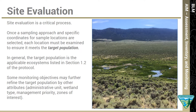Site evaluation is a critical process for all monitoring projects. Once a sampling approach and the specific coordinates associated with sample locations have been selected, each location must be evaluated to ensure it fits within the target population of the monitoring project. In general, the target population is the applicable riparian and wetland ecosystems defined in section 1.2 of the protocol. However, some monitoring projects may refine the target population further, for example by administrative unit, wetland type, management priority such as sage-grouse habitat, or by specific zones of interest within a larger riparian or wetland complex.